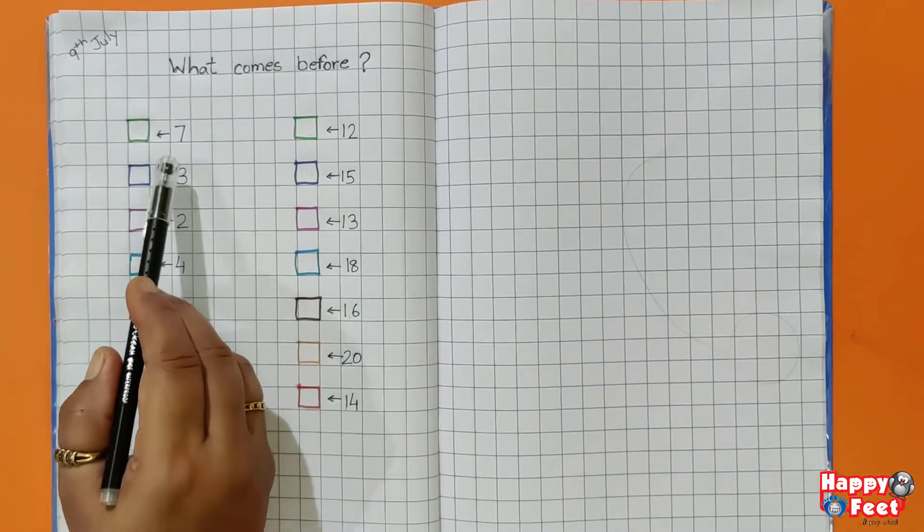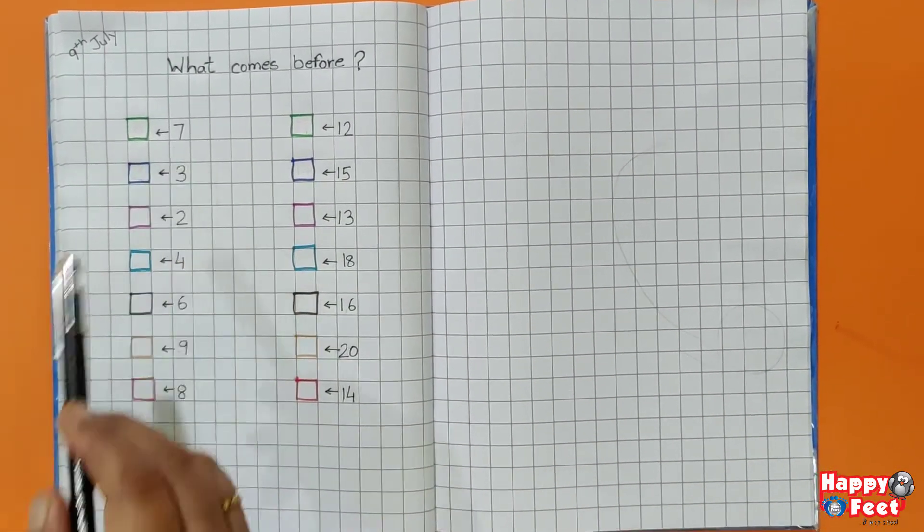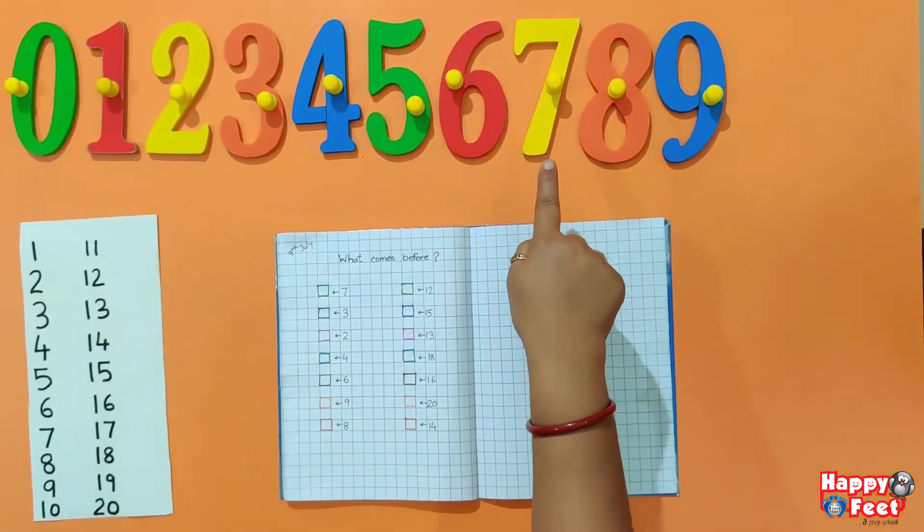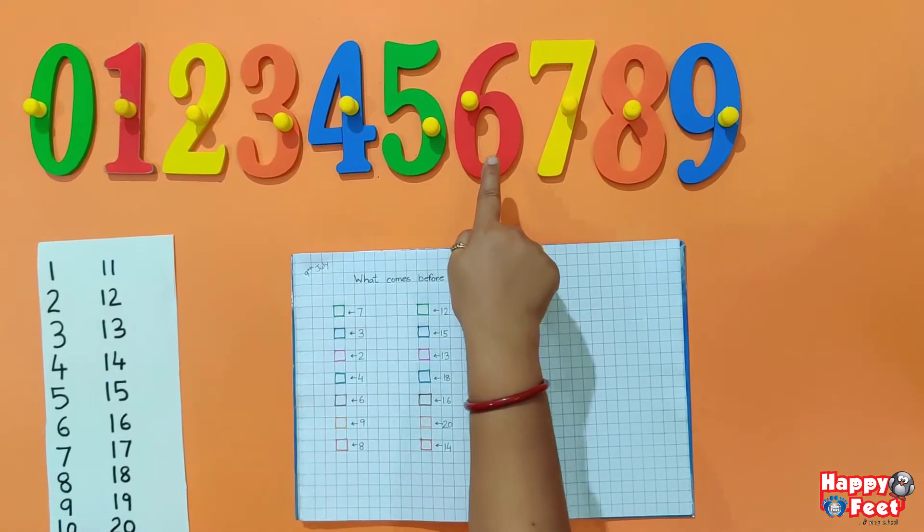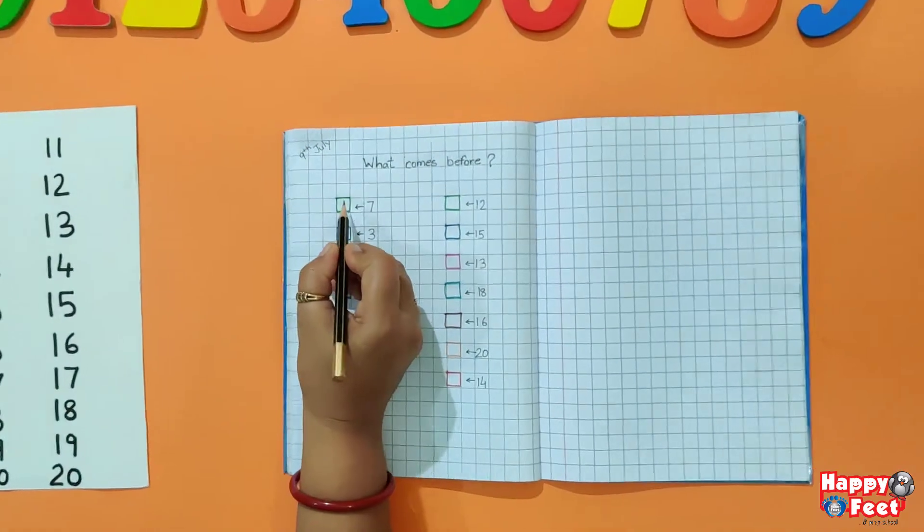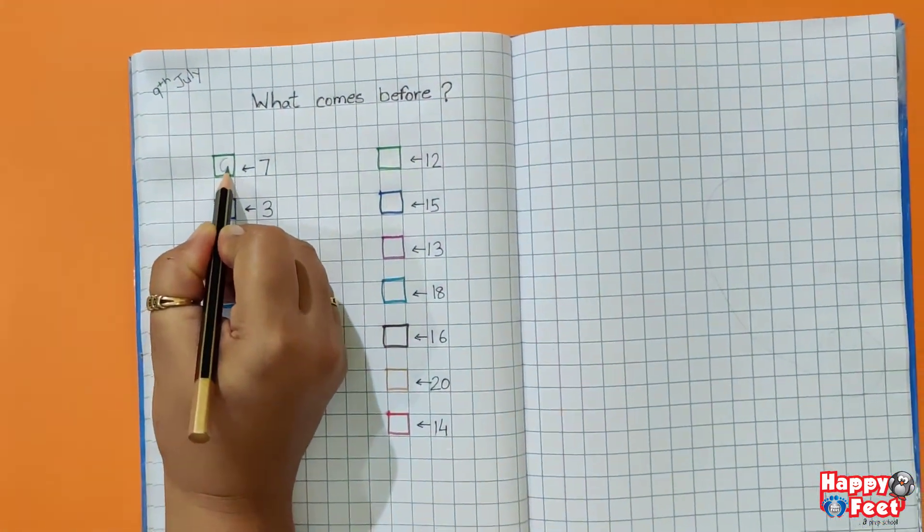So which number is this? 7. And where is 7? This is 7. What comes before 7? Which number is this? 6. So we are going to write here 6.